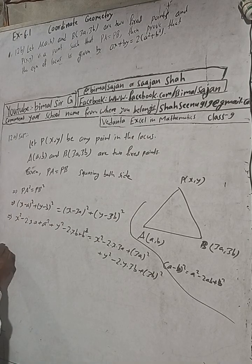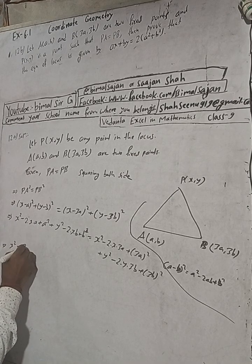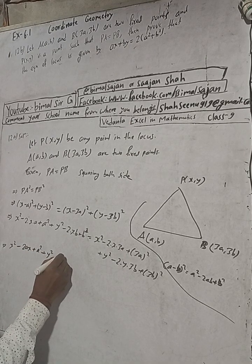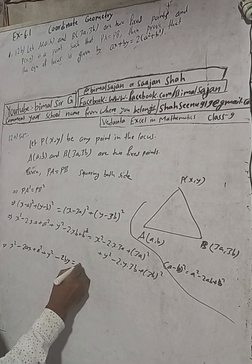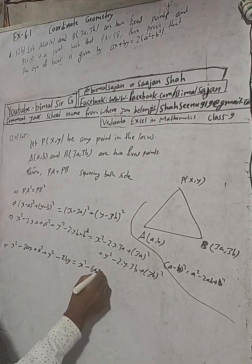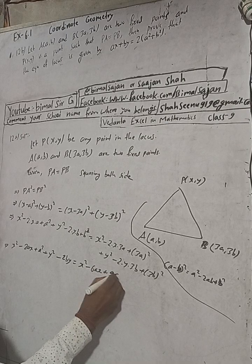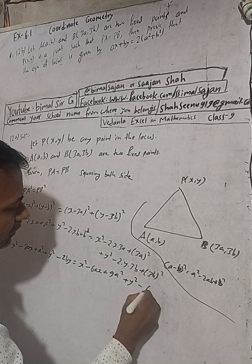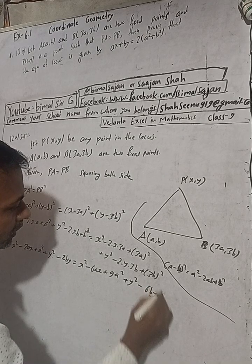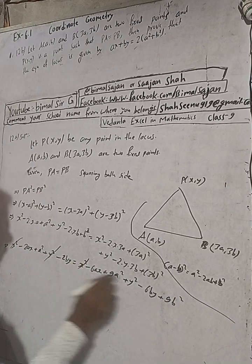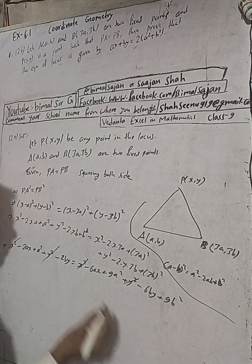This can be written as x² − 2ax + a² + y² − 2by + b² equals x² − 6ax + 9a² + y² − 6by + 9b². Now x² and x² cancel, and y² and y² cancel, because they have the same sign and are on opposite sides.